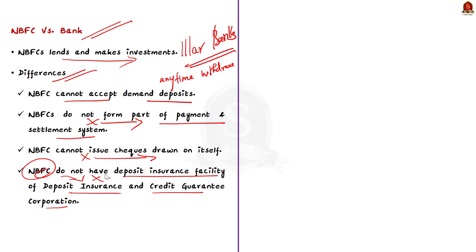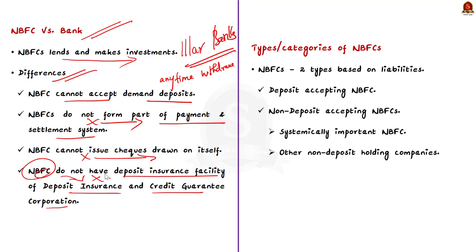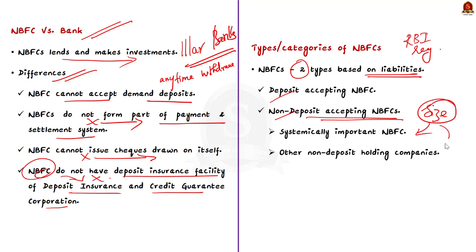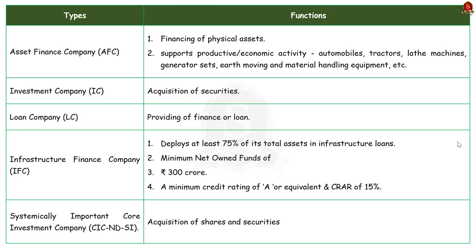Now we will see the different types or categories of NBFCs registered with the RBI. NBFCs can be categorized into two types based on liabilities — that is deposit and non-deposit accepting NBFCs. Non-deposit taking NBFCs by their size can be categorized into systematically important and other non-deposit holding companies. The first type is the Asset Finance Company, which is a financial institution carrying on financing of physical assets as its principal business. It supports productive or economic activity such as automobiles, tractors, lathe machines, generator sets, earth-moving and material-handling equipment, and general-purpose industrial machines.